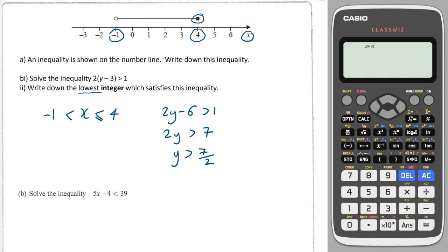And it says, what's the lowest whole number which satisfies this inequality? Well, we know that y has to be greater than 7 over 2, which is the same as y being greater than 3.5. So the next number up after 3.5, that's a whole number, will be 4. And that will be the lowest possible integer. So the answer is 4.